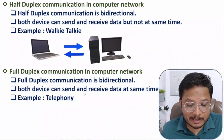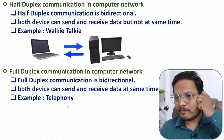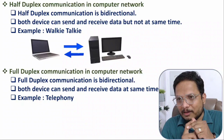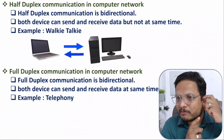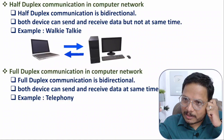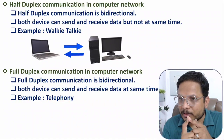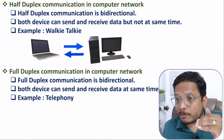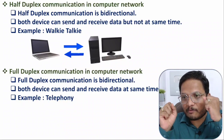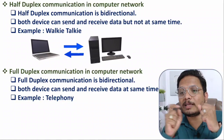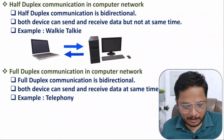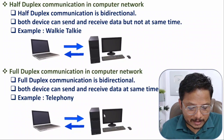Full duplex communication is also bidirectional, but here both devices can send and receive data at the same time — like a telephone or mobile. When you call somebody, both parties can exchange data simultaneously. If someone is talking to you, you can also talk in between and that message will reach them. Simultaneous communication is possible in full duplex, unlike half duplex where one must wait.